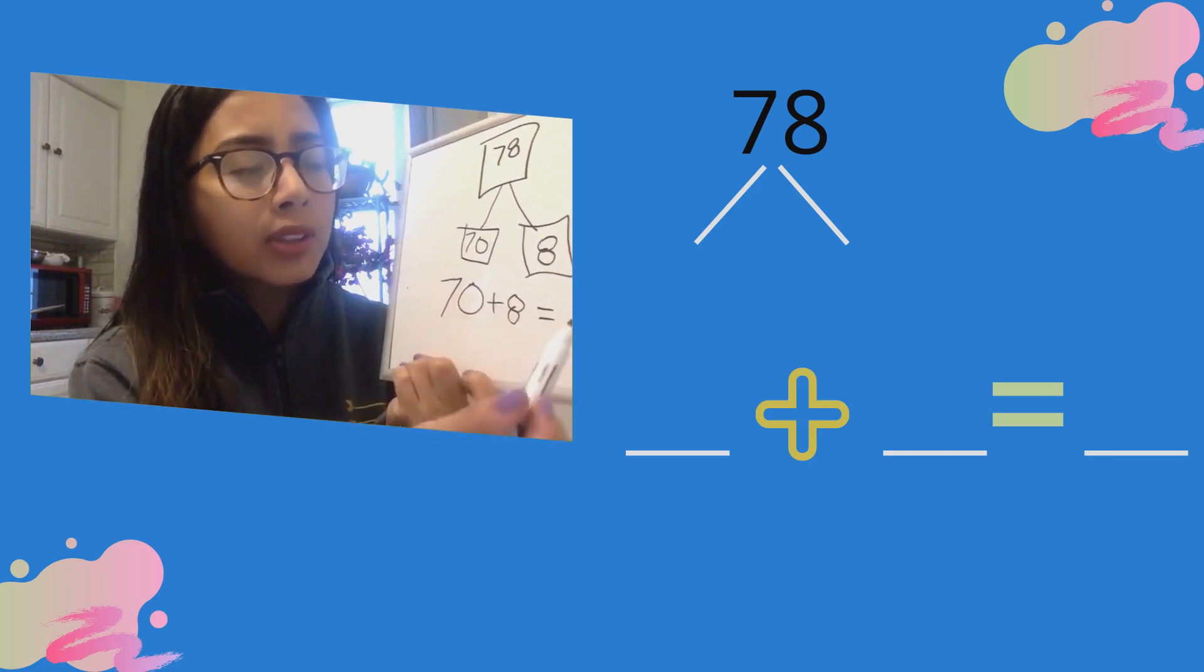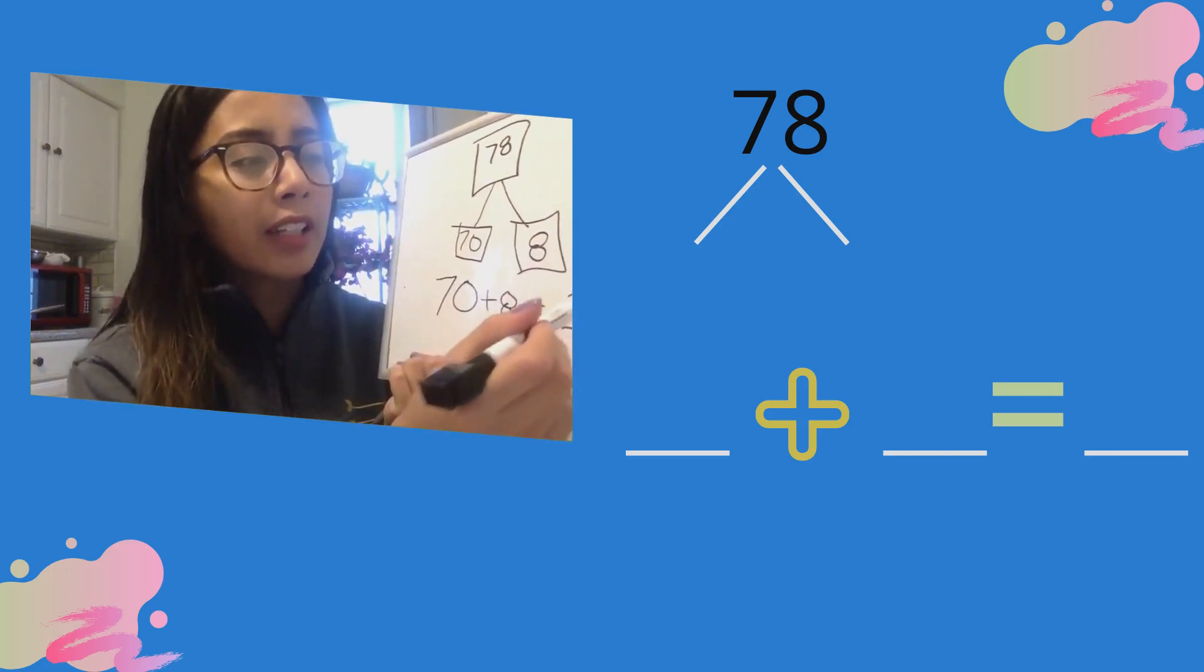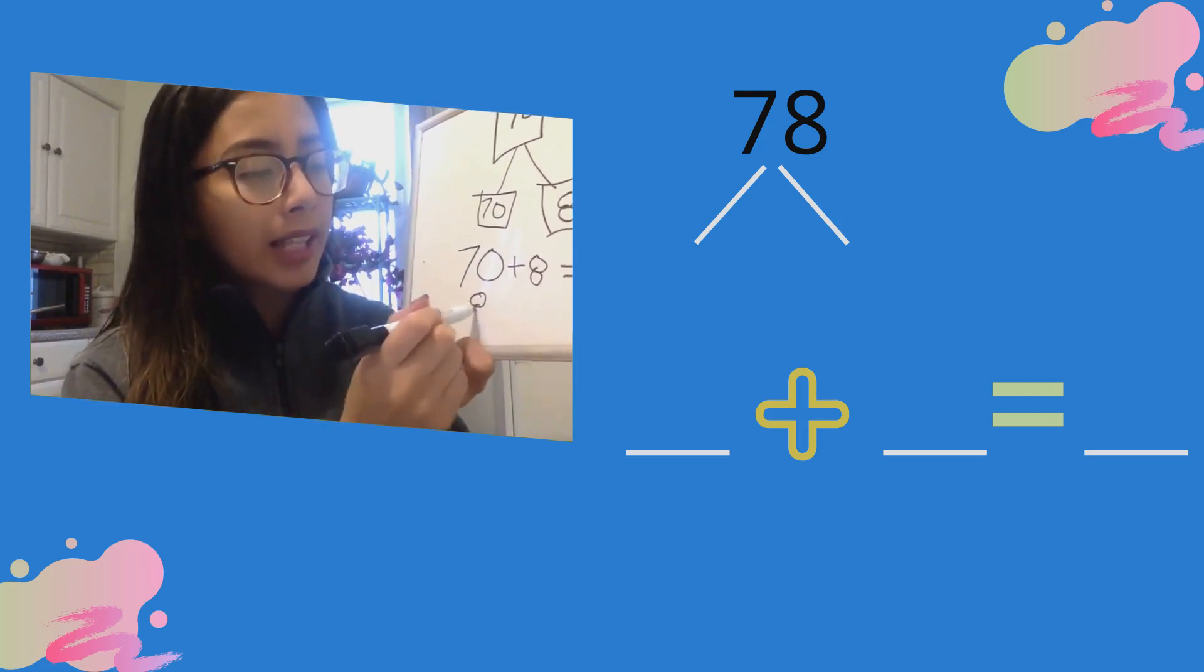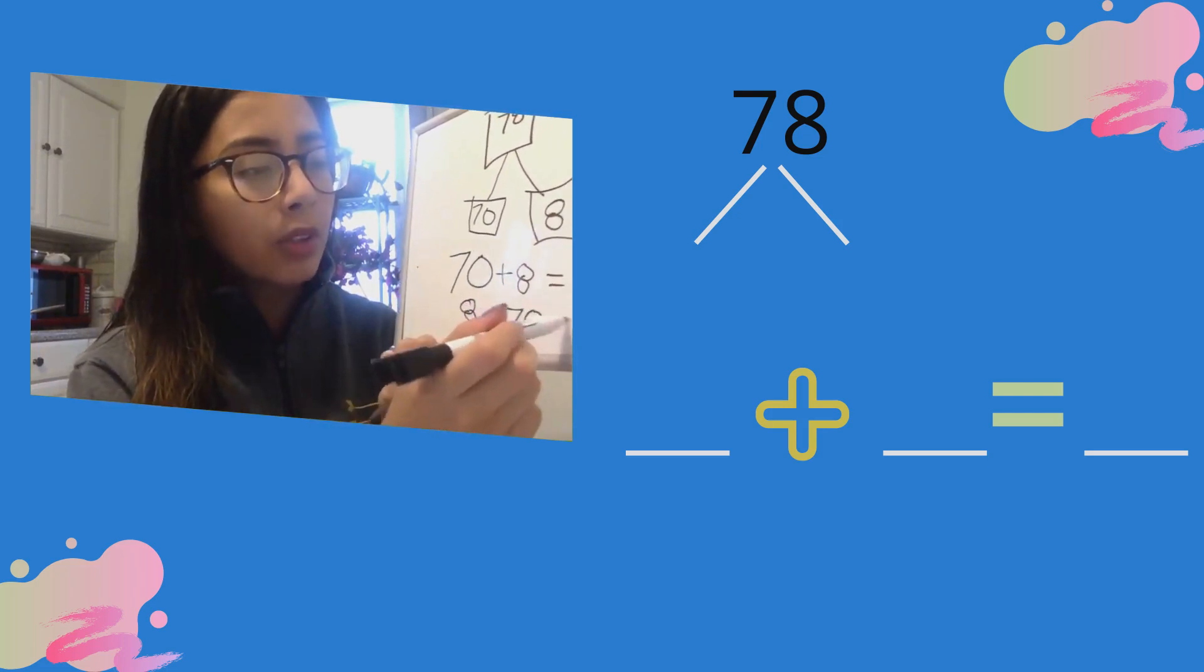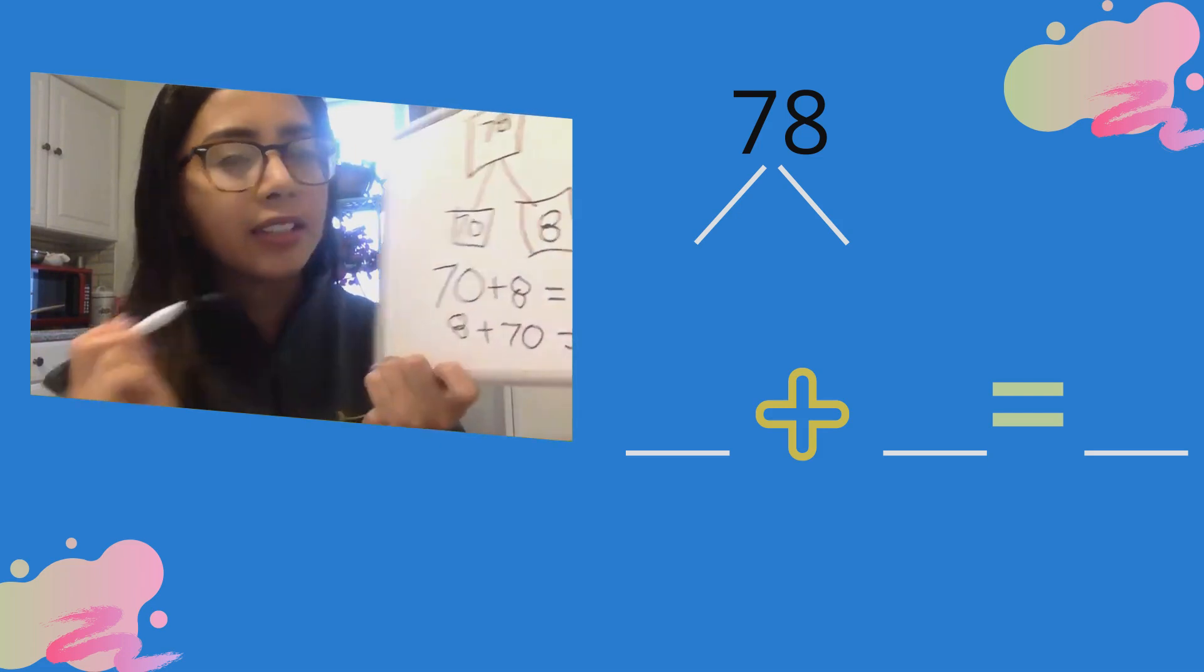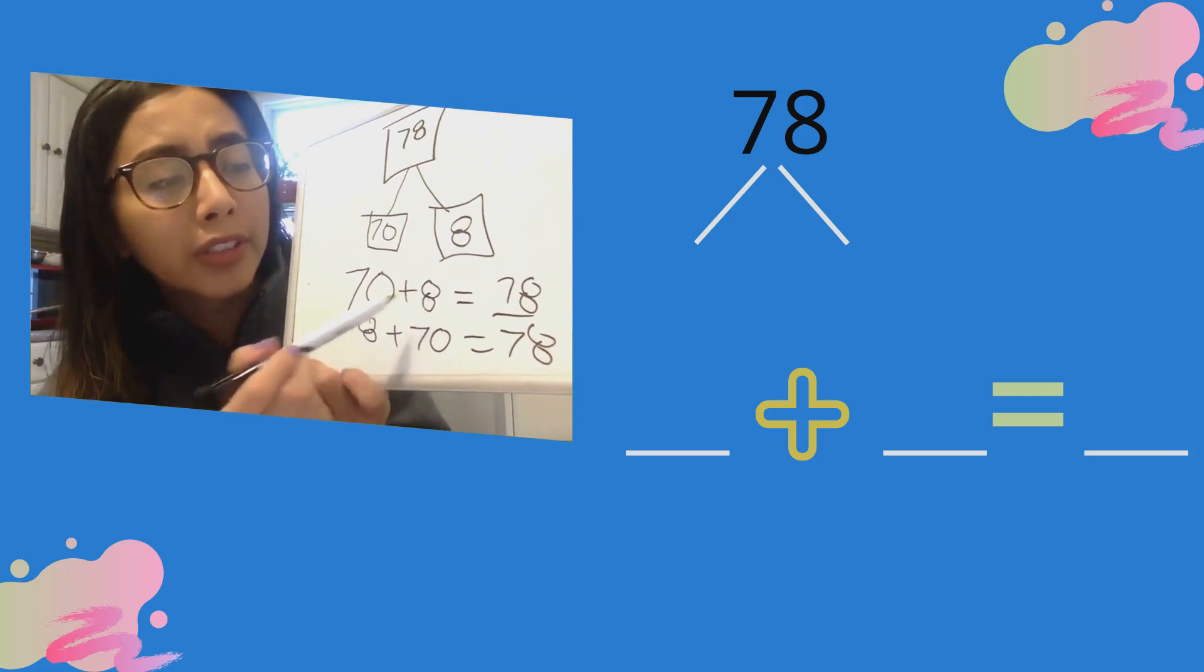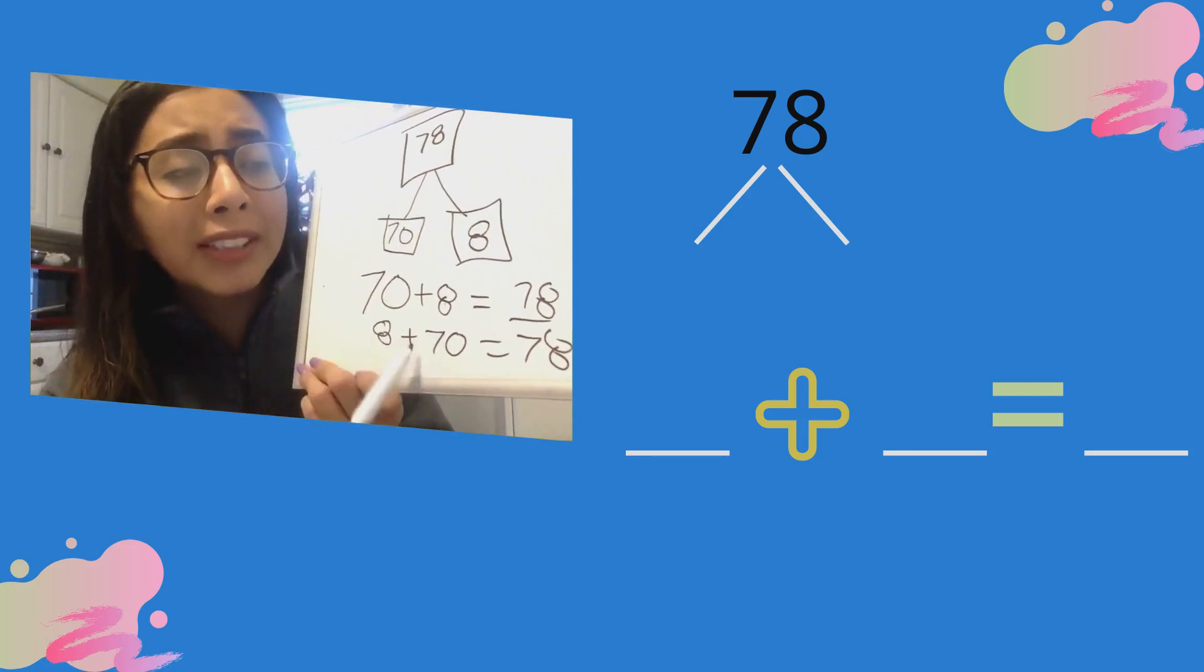I wonder if I start this time with my ones and I say 8 plus 70 equals 78. So in both of these number sentences, even though they start in different ways, both of these add-ins add up to my total of 78. The total did not change.